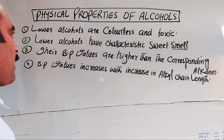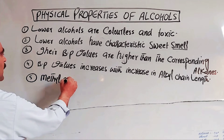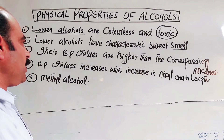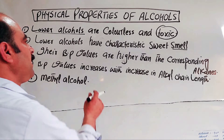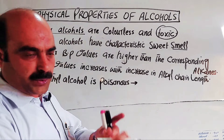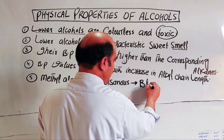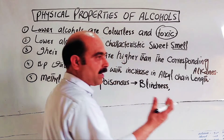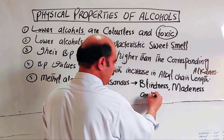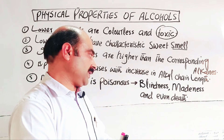Property number five: methyl alcohol. Methyl alcohol is a lower alcohol, but it is toxic — zahrilah. Methyl alcohol is a poison. It causes blindness and even death.